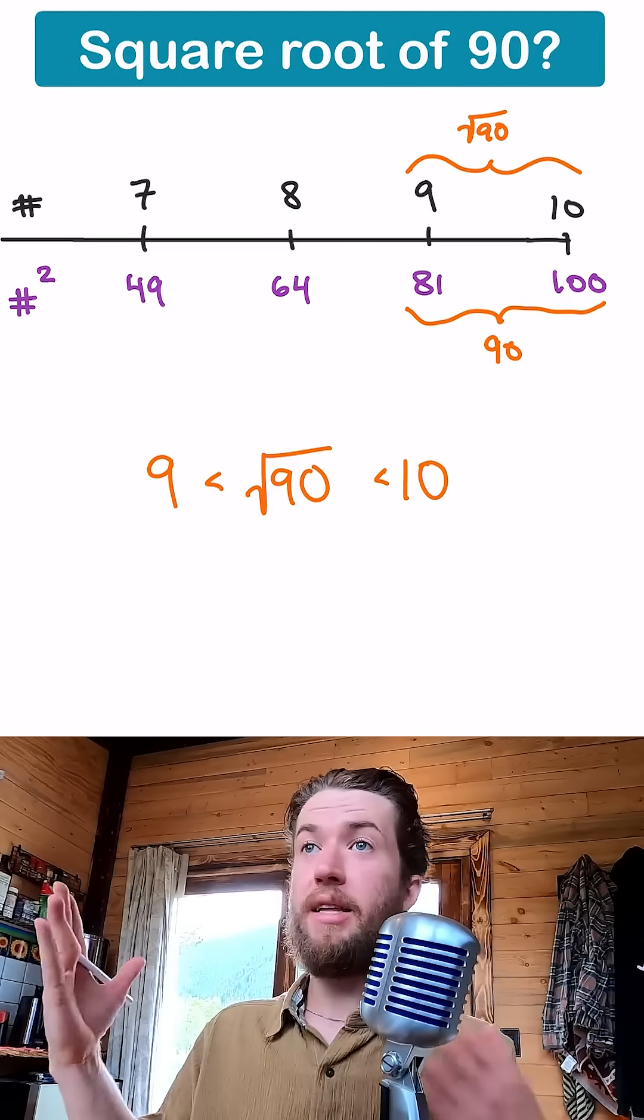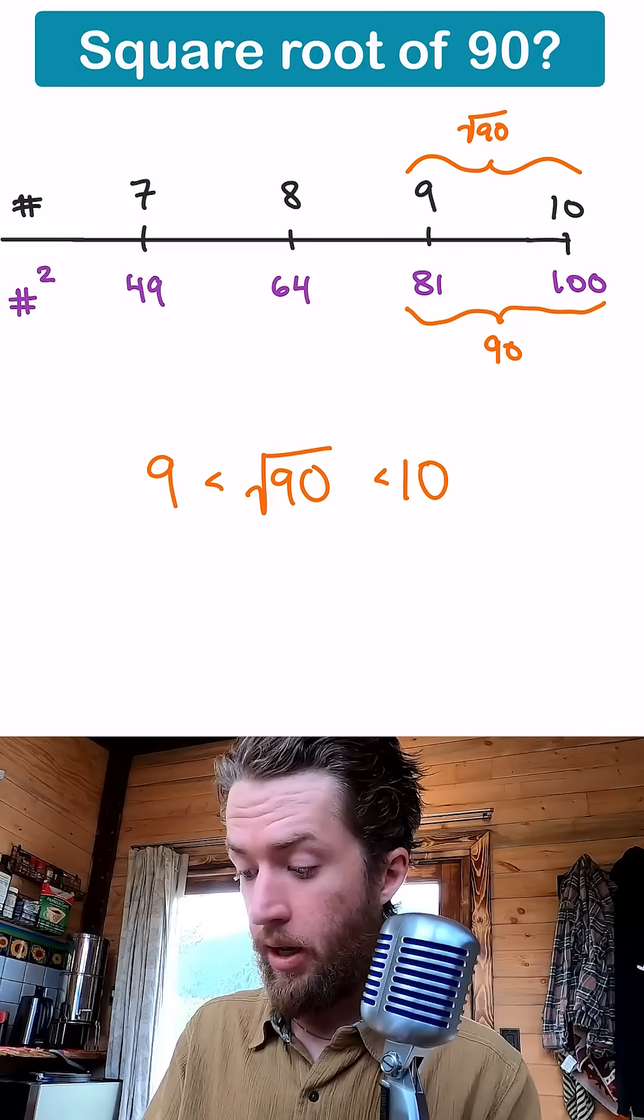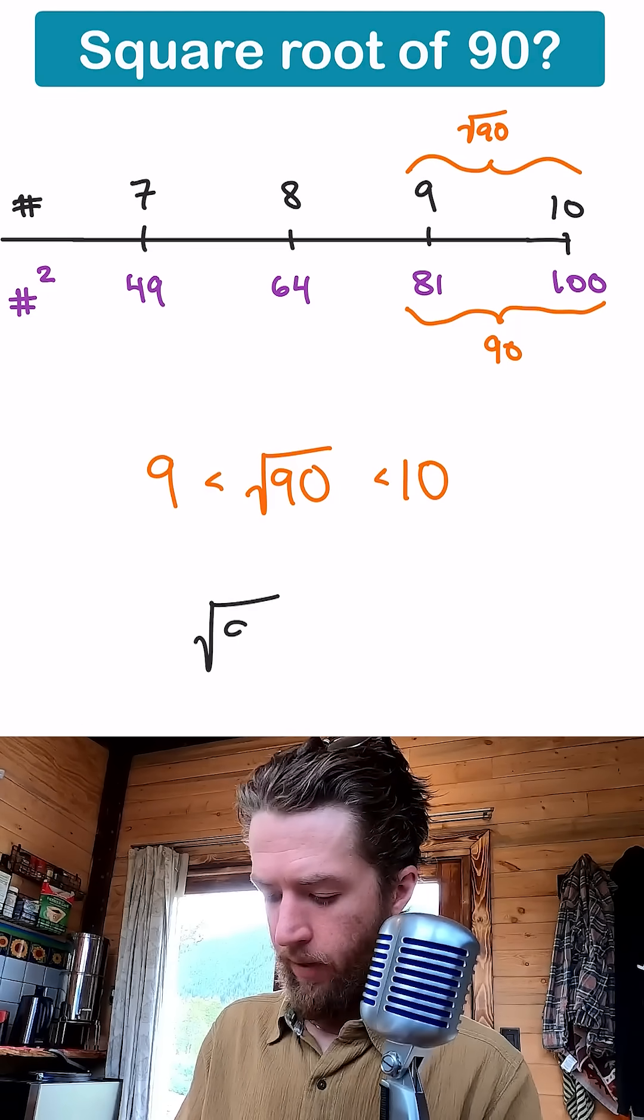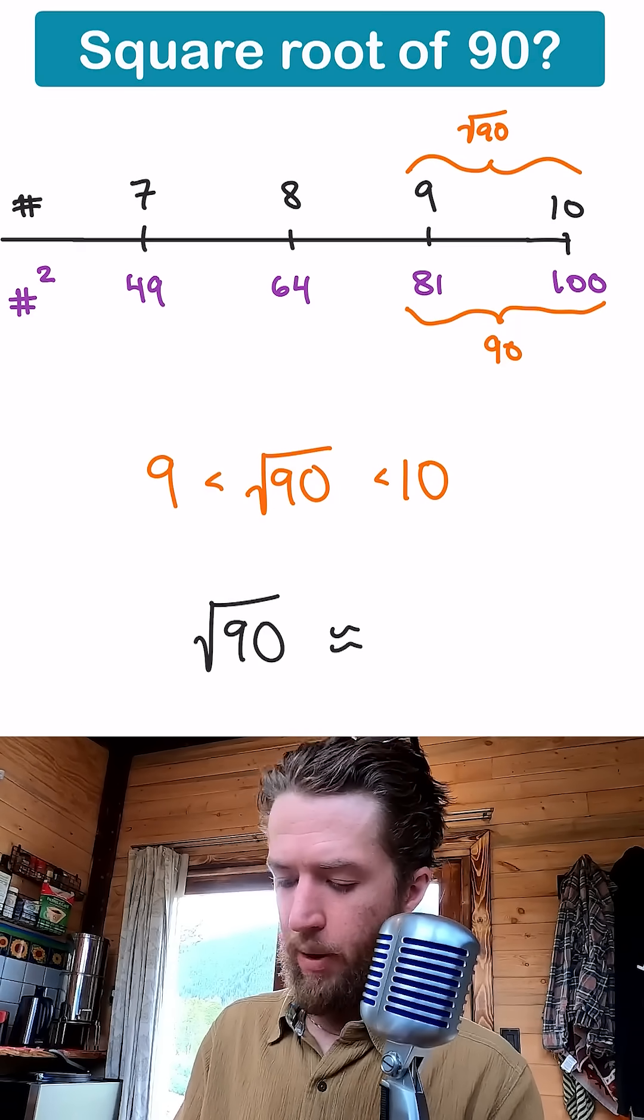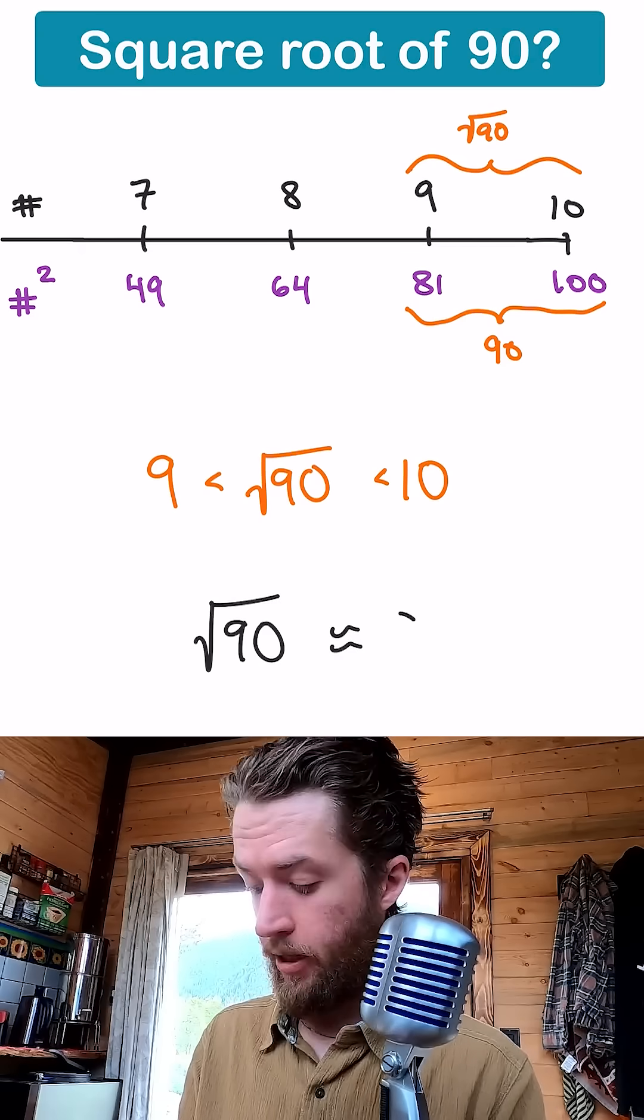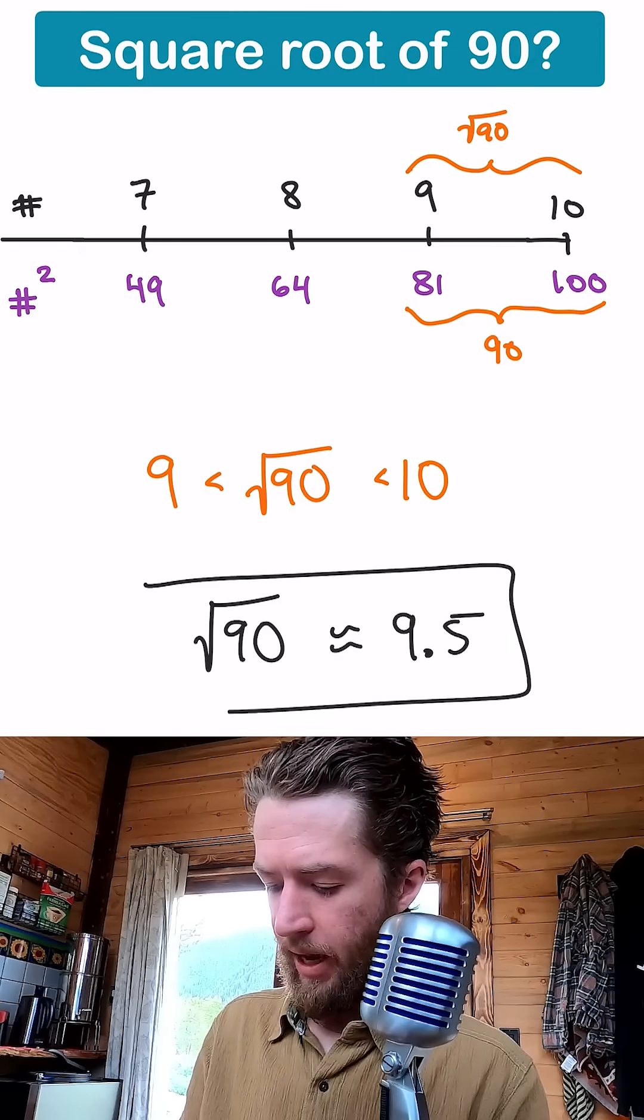And 90 is almost dead in the middle between 81 and 100. So I really think that the square root of 90 is going to be just about exactly between 9 and 10. Or like 9.5 is my estimate.